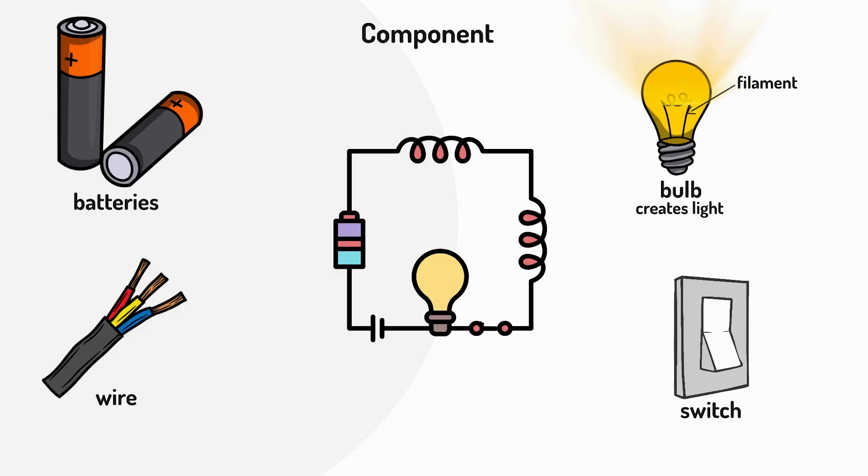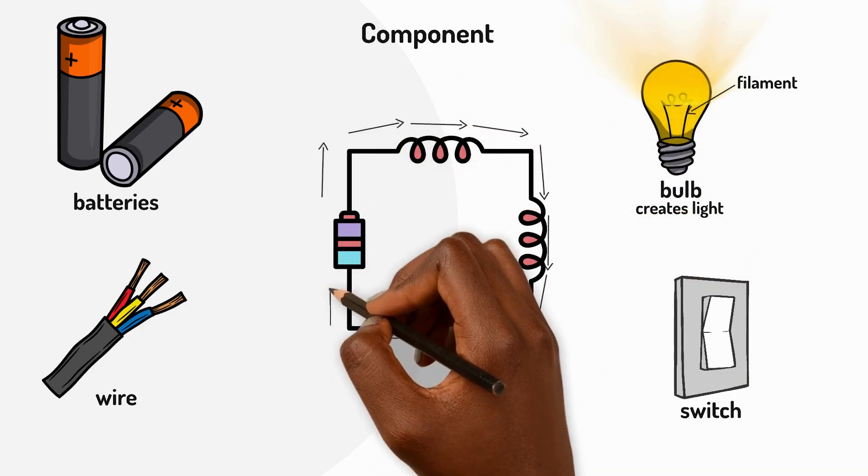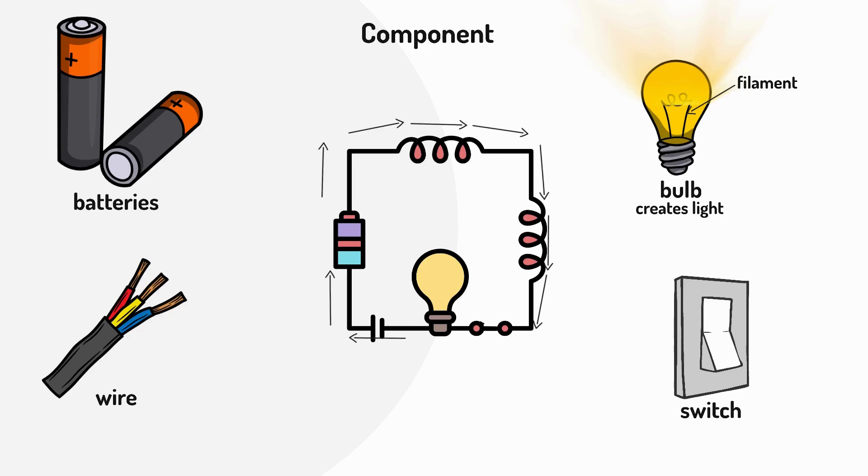Here's a simple circuit. The battery pushes electricity through the wires to the bulb which lights up and then back to the battery again. It's a complete loop with no gaps.